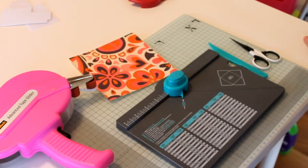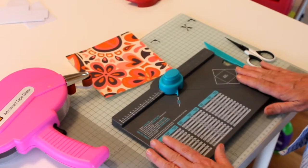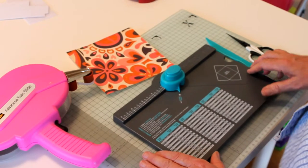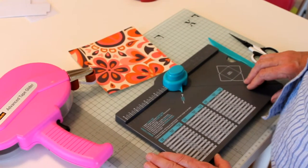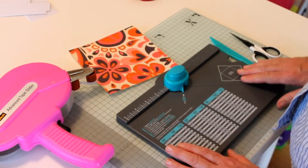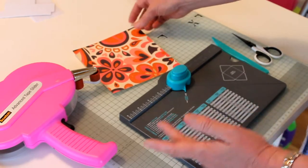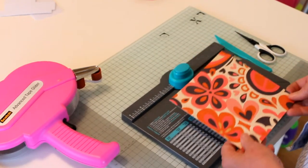Hi, it's the Irish Scrapper back with another tutorial. Quite a while back I did a review on the We R Memory Keepers envelope punch board, and since then we've become best friends because this is one of the best pieces of equipment that I have. It does all sorts of things besides making envelopes, so I want to demonstrate a box.